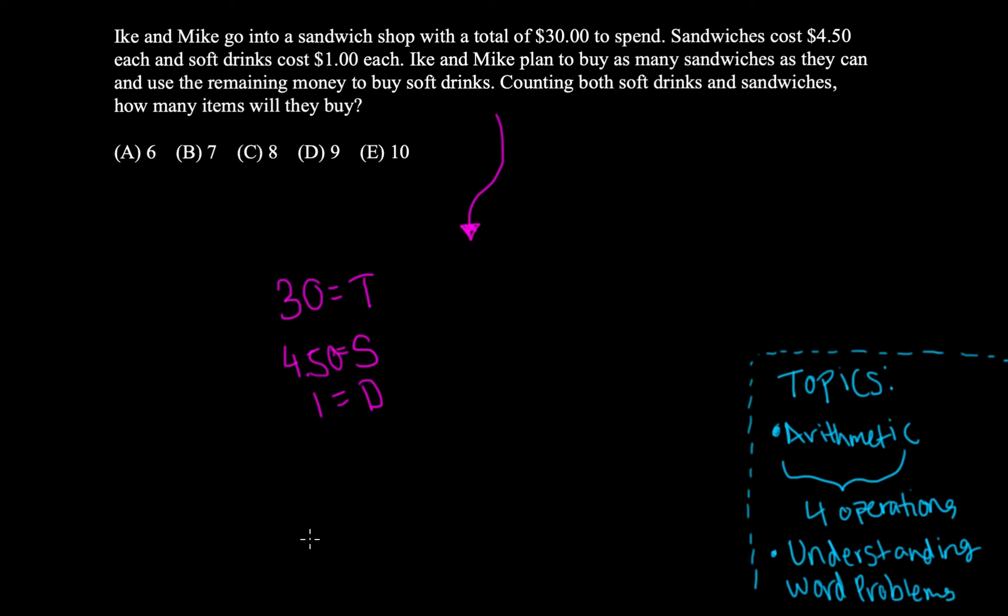Given this information, what I would do is I would go ahead and say, okay, what they're telling us is X times S has to be less than or equal to 30, because they can't go over the amount they spent.